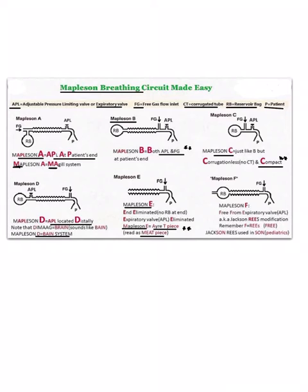Now coming to Mapleson F circuit. F means it is free of expiratory valve, expiratory valve also known as APL, and it is also known as Jackson Rees modification. F you can remember as free, that is free of APL, and Rees, hence it is known as Jackson Rees.